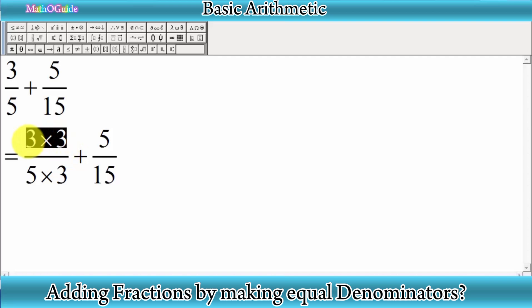equals 9, and 5 times 3 equals 15. Now you can see we have the same denominator. Whenever you have the same denominator, you can add them easily. Write the denominator as it is. We have 15 in both fractions, so write 15 here. Now add the two numerators: 9 plus 5, which equals